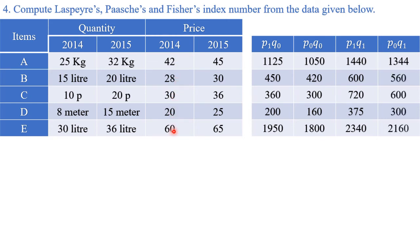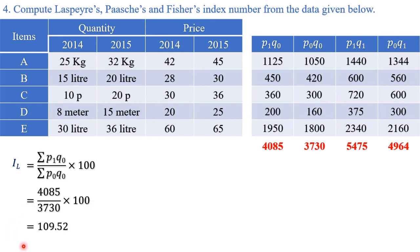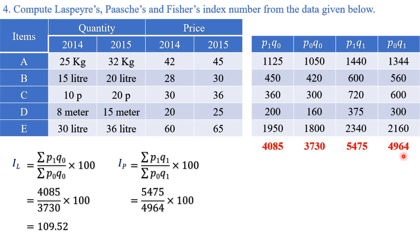Make totals of all four columns: p1·q0, p0·q0, p1·q1, and p0·q1. Laspeyres' index number = p1·q0 / p0·q0 × 100 = 4085 / 3730 × 100 = 109.52. Paasche's index number = p1·q1 / p0·q1 × 100 = 5475 / 4964 × 100 = 110.29.